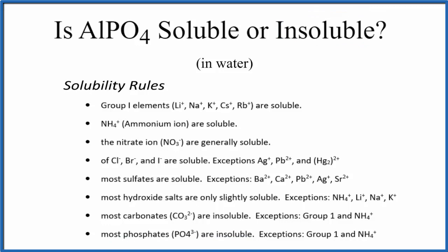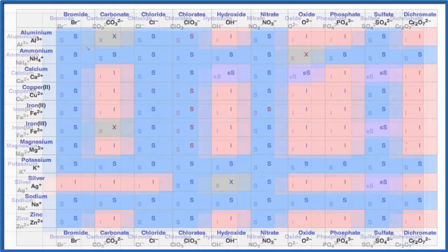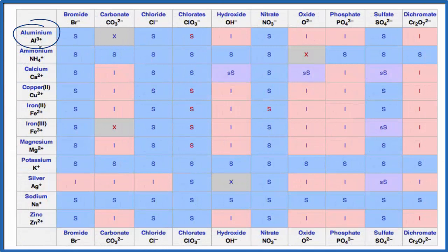Let's look at a solubility table real quick just to check that. We find aluminum right here, Al3+, and phosphate, PO4-. We go over and right there, I, insoluble.